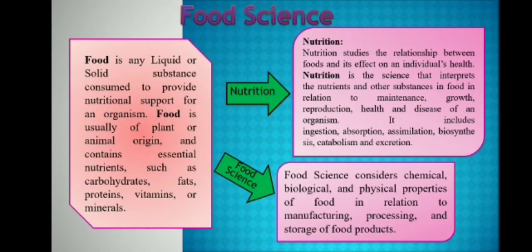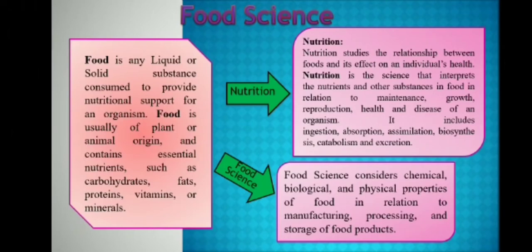In food science, it considers chemical, biological and physical properties of food in relation to manufacturing, processing and storage of food products. These reactions may be a result of the interaction between components with the medium of cooking and the environmental conditions like heat, cold, light and air to which they are subjected during cooking. The study of food science also includes understanding the nutritive value of different foods and methods of preserving them during cooking.